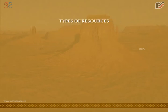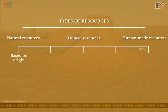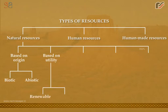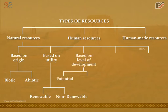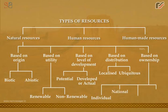Types of resources: Natural resources, Human resources, and Human-made resources — classified based on origin. Based on origin: Biotic and Abiotic. Based on utility: Renewable and Non-renewable. Based on level of development: Potential and Developed or Actual. Based on distribution: Localized and Ubiquitous. Based on ownership: Individual, National, and Community.